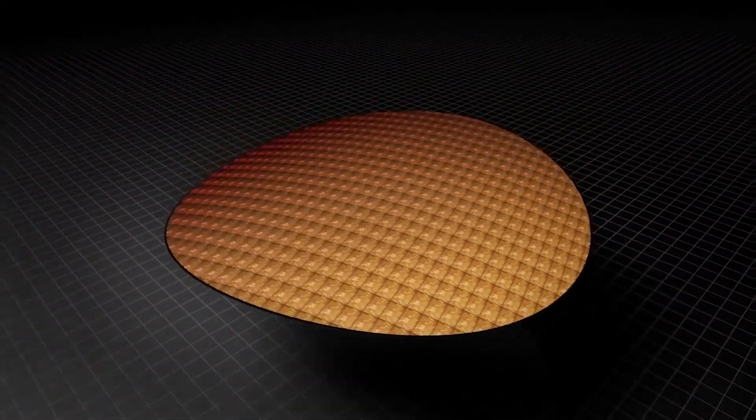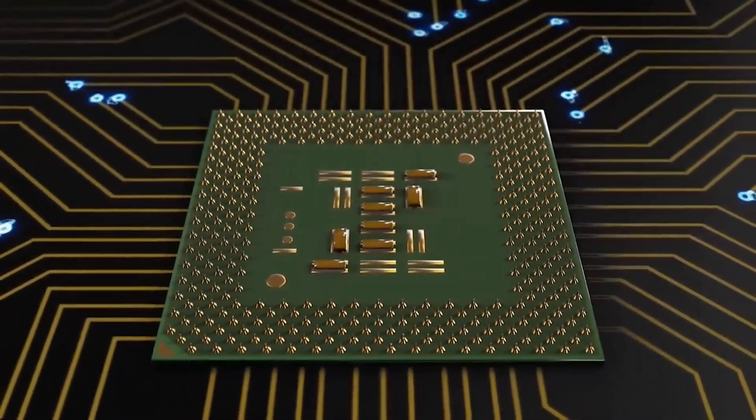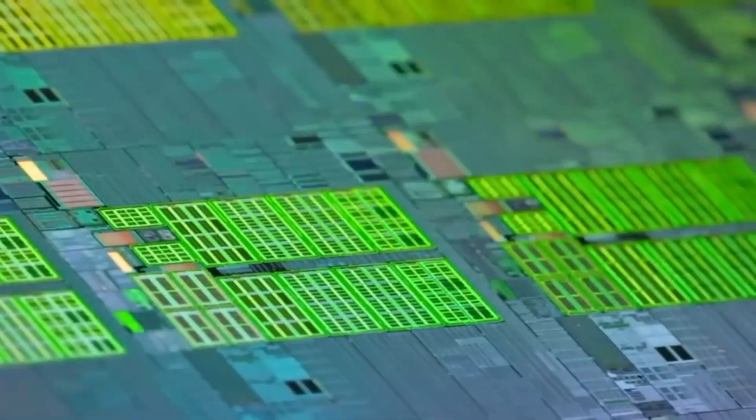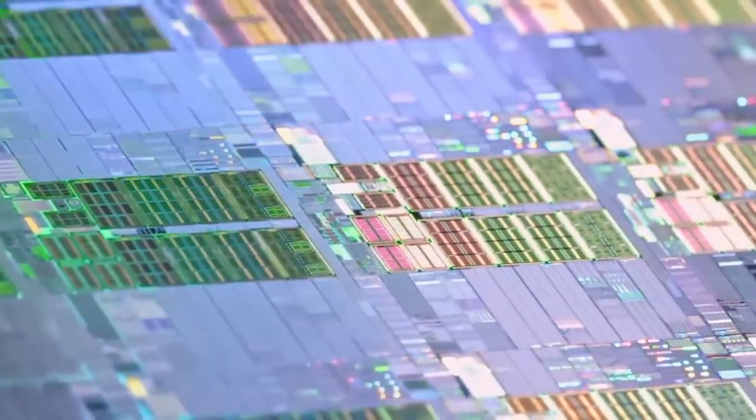This means that depending on how the silicon is treated, it can conduct or block electrical current. This property makes it perfect as a base for the millions of tiny transistors needed to make a modern microprocessor.